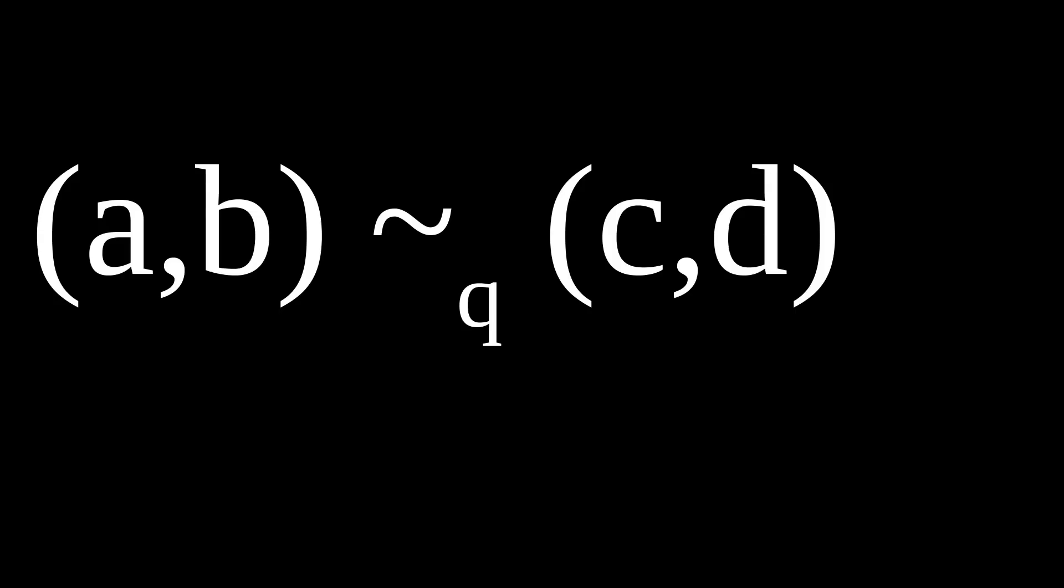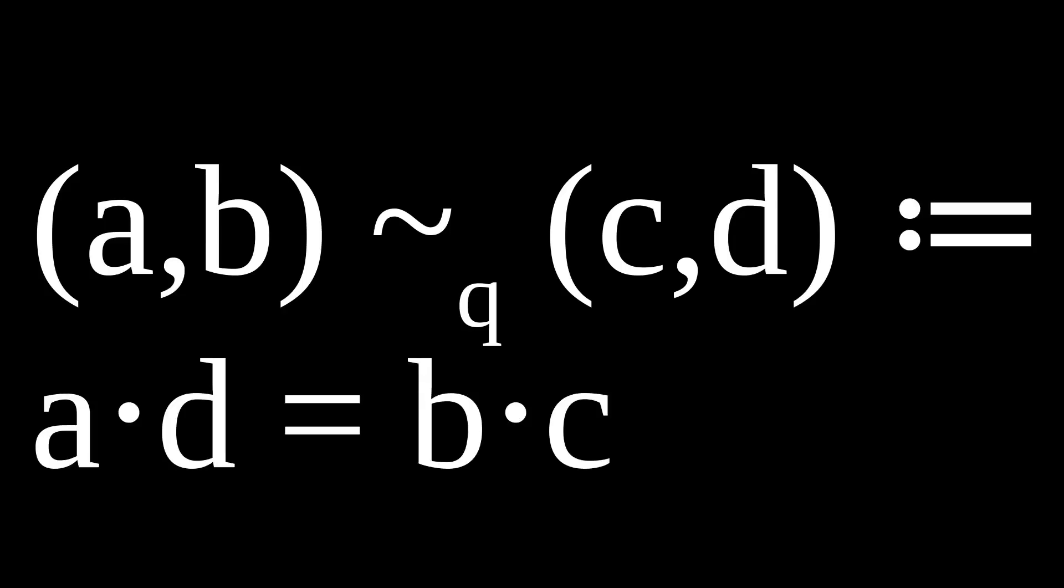Consider this: we can add, multiply, and subtract integers, but division is still not always possible, so let's try and use the exact same trick once again. For pairs of integers—this time actually the second isn't allowed to be zero—let a,b be equivalent to c,d according to tilde q, if a times d equals b times c.